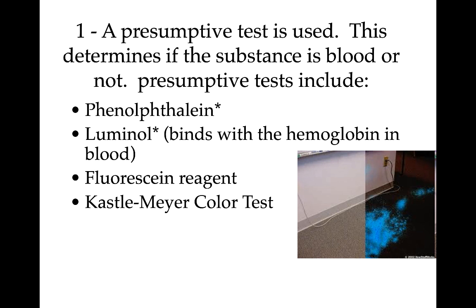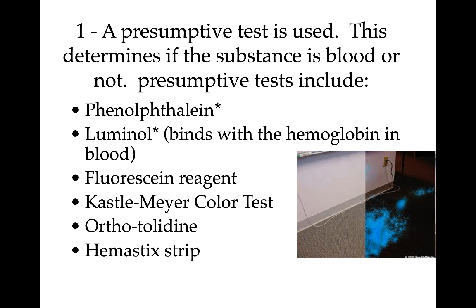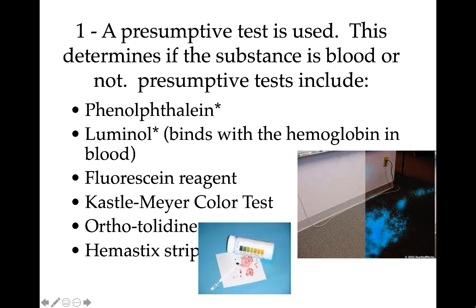Some other presumptive tests used in the past or under certain circumstances include the fluorescein reagent, the Kasselmeyer color test, the orthotolidine test, and the hematistic strip test. The hematistic strip is very situational — it's for finding blood in a urine sample. So step one: do a presumptive test. If we get a positive result, we can assume it is blood. The second step is then to determine if it's human blood.